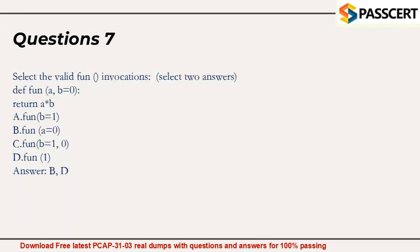Question 7. Select the valid function invocations. Select two answers. def fun a, b equals 0, return a asterisk b. A. fun b equals 1. B. fun 0 equals 0. C. fun b equals 1, 0. D. fun 1. Answer: B, D.